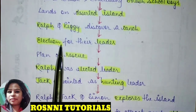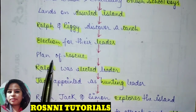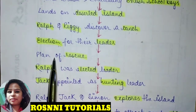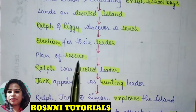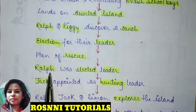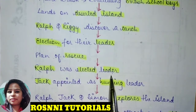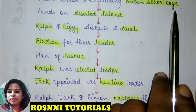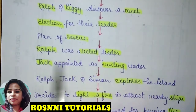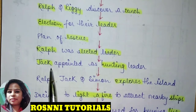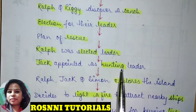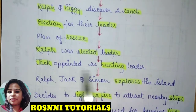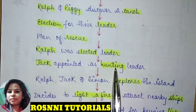The election was held, and they also had to deal with a plan for rescue. Ralph was elected leader by the boys. Jack was then appointed by Ralph and made leader of the hunters, whose job was to hunt and provide food for all the students stranded on the island.